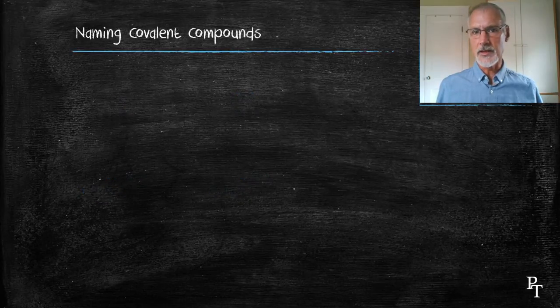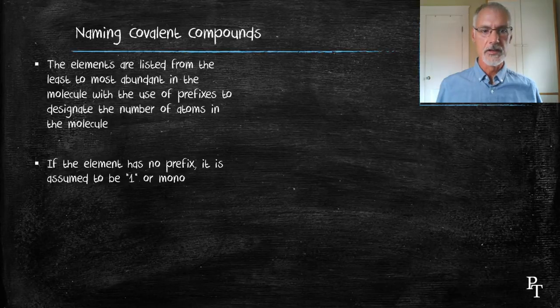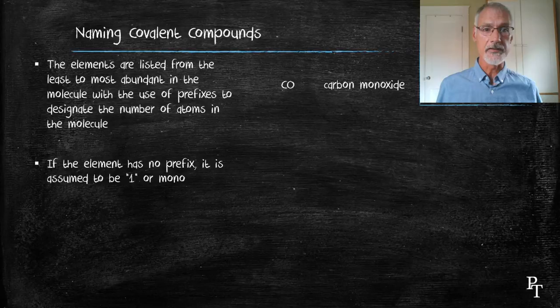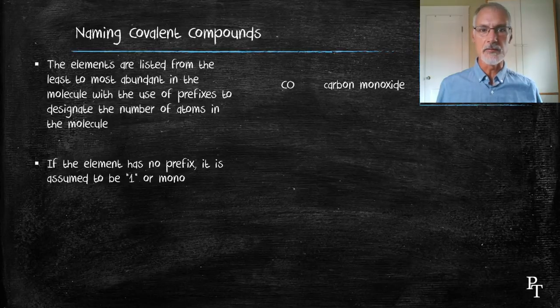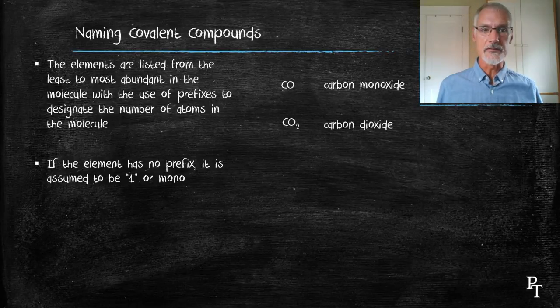As far as naming covalent compounds, they have a different set of rules. By and large, we use what's called the prefix method. So, for instance, my first example, carbon bonded to a single oxygen, we would call it carbon monoxide. Now, I know there is only one carbon present. It is usually by convention that if there's only one of an element present, we tend to drop off the mono on the first word. We could also call it monocarbon monoxide, but again, we often leave off that first mono if there's only one of them present. My next example would be carbon dioxide. The two gets the prefix di.